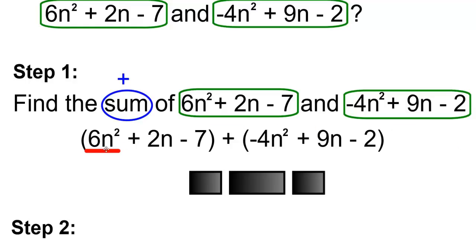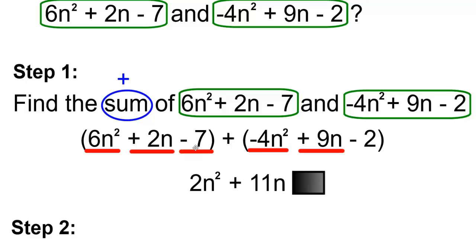So combine the like terms. 6n squared and minus 4n squared is 2n squared. Positive 2n and positive 9n is plus 11n. And negative 7 and negative 2 will be negative 9 or minus 9.